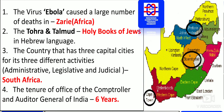The country that has three capital cities for three different activities — administrative, legislative, and judicial — is South Africa. These are Cape Town, Pretoria, and another city serving administrative, legislative, and judicial purposes respectively.